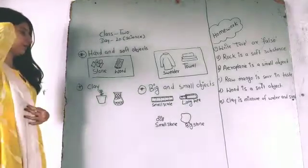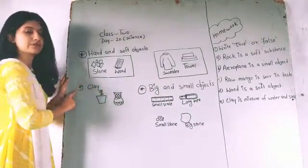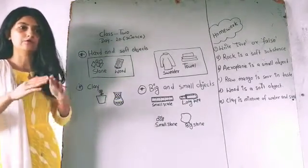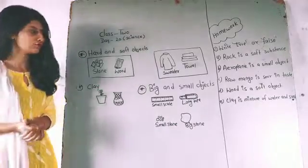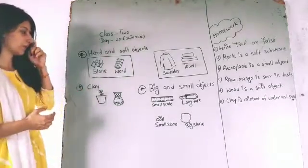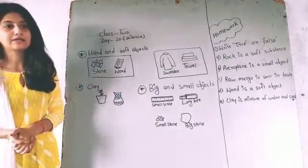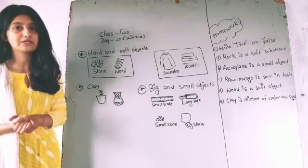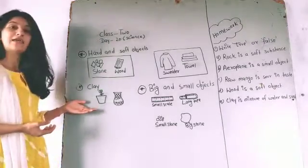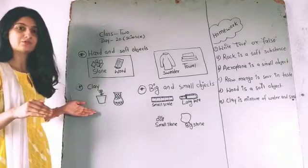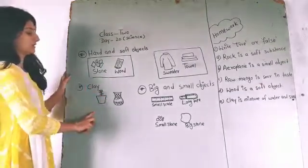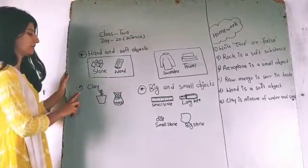Moving to the next one, we have clay. The objects which are made from clay — we can make many objects from clay such as pots, flower vases, and statues. Clay is a mixture of water and soil. One interesting thing about clay is that clay is soft when it is wet, and it becomes hard when it is dry.